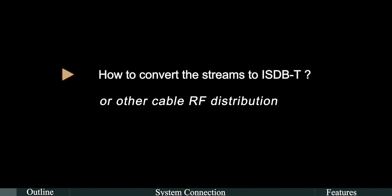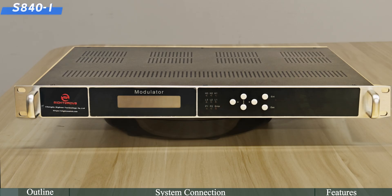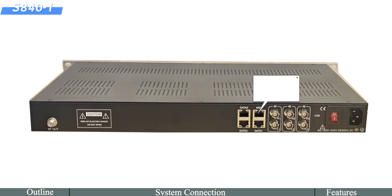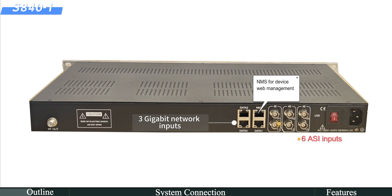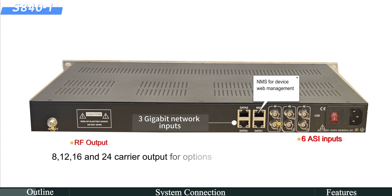Let's look at the device S840-1. This is the interface. NMS for device web management. 3 gigabit network inputs — each input supports a maximum of 128 IP inputs. 6 ASI inputs. RF output: 8, 12, 16, and 24 carrier output options.